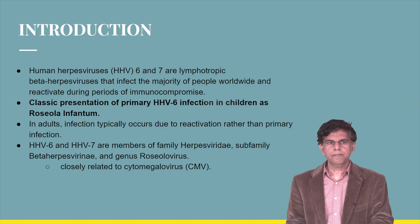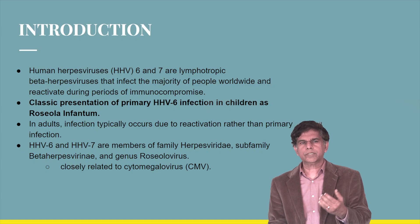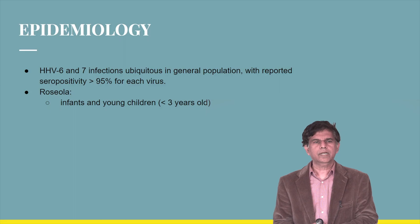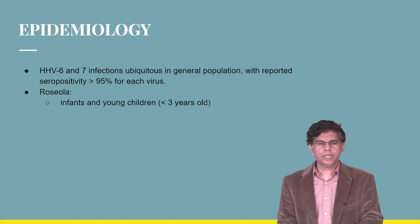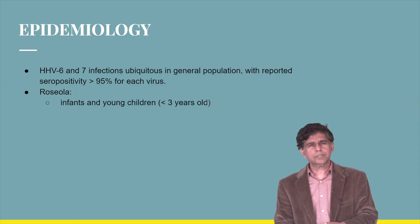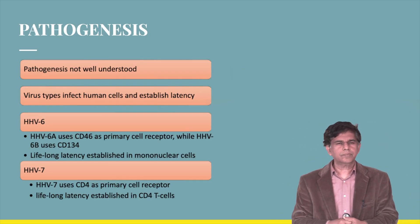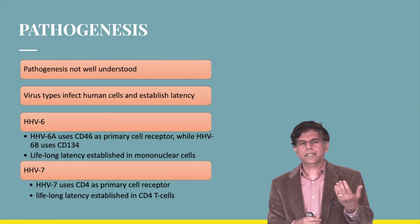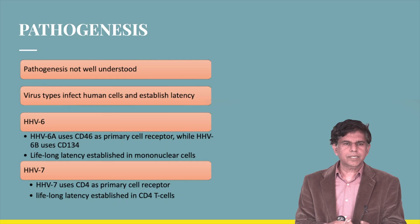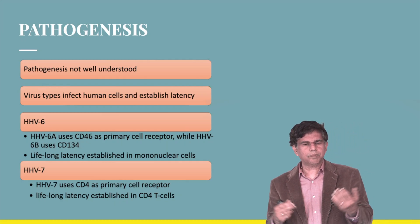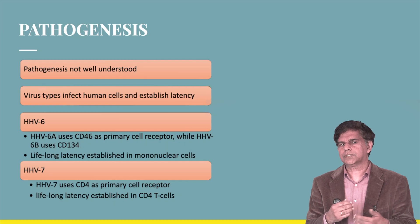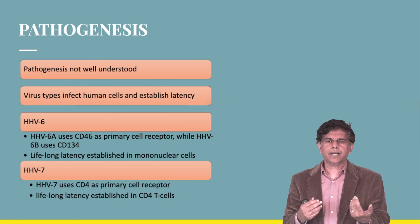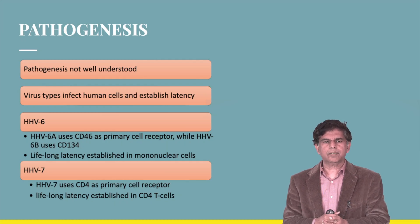Seropositivity is about 95% for each virus in infants and young children, where it's usually called Roseola. Regarding pathogenesis — it's not very clearly understood — the virus infects human cells and establishes latency. HHV-6A uses CD46 as a primary cell receptor, while HHV-6B uses CD134. This leads to lifelong latency, meaning the virus can hide in the body for a very long time and reactivate later in life.